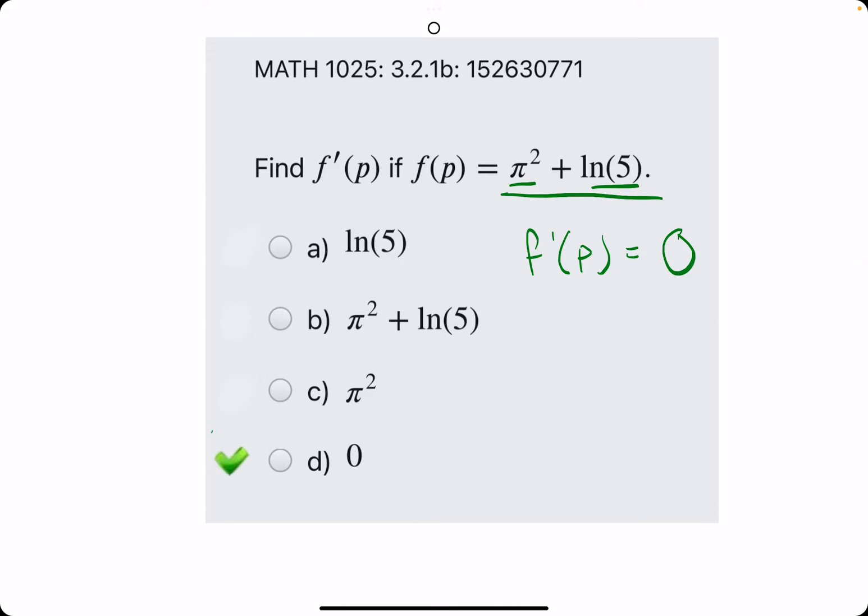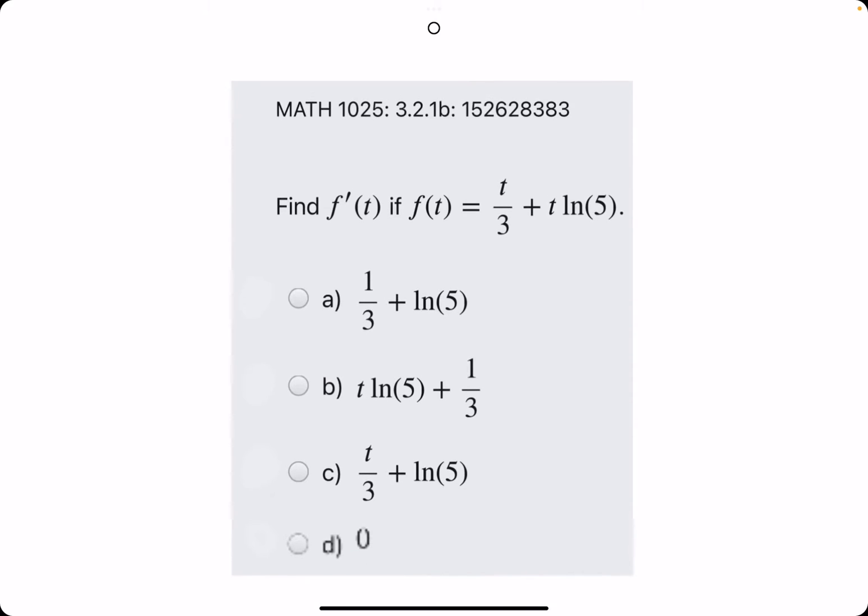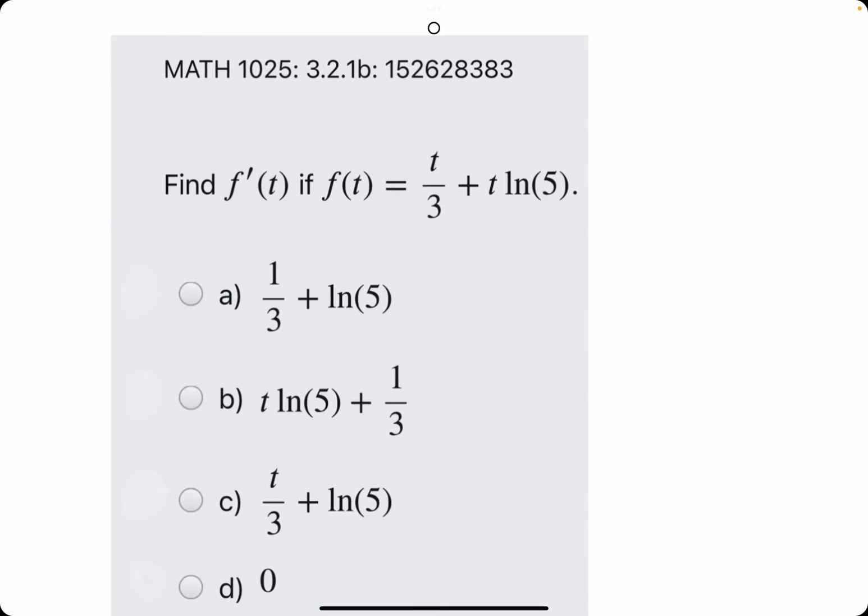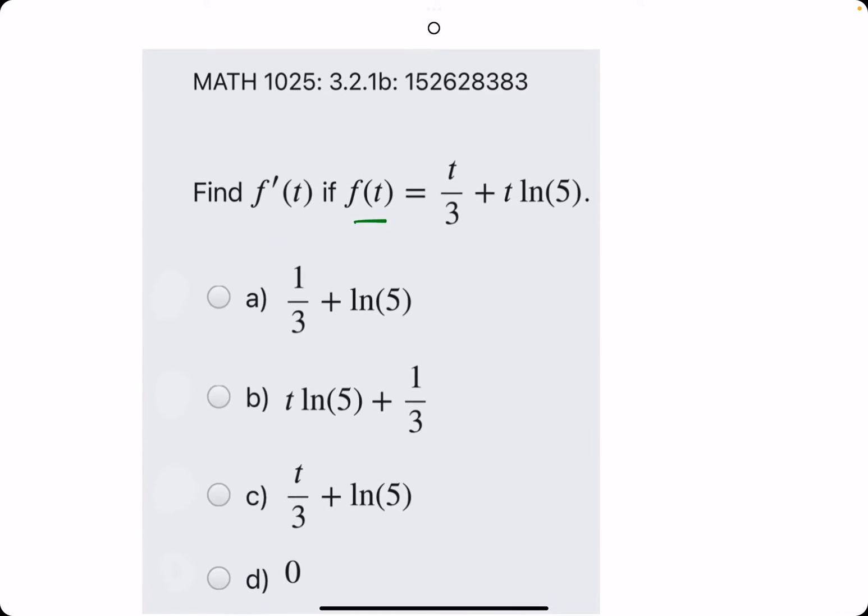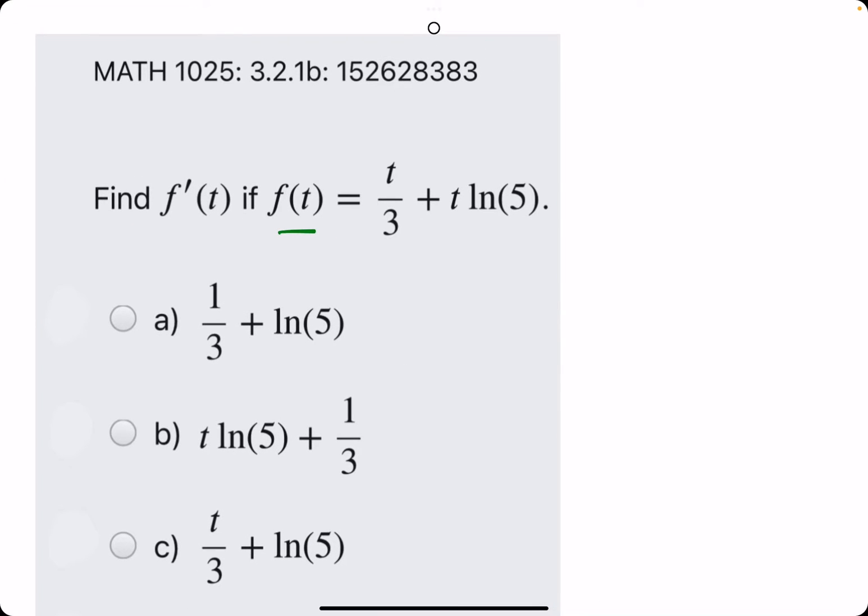So we break out the eraser to see that d is our answer. Let's go and do one more. f prime of t if f of t is equal to this. All right, little more complex but let's break it down.